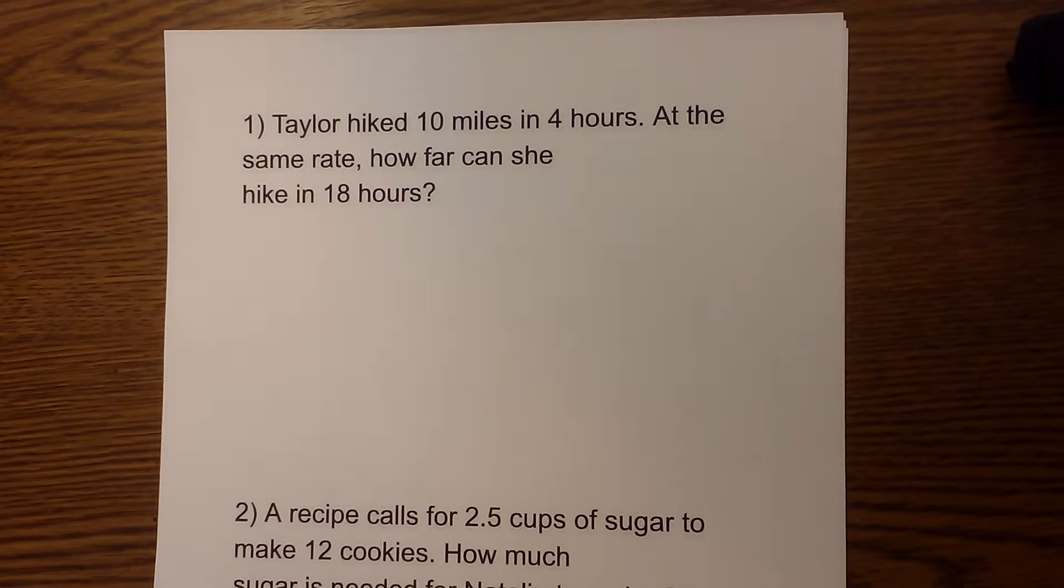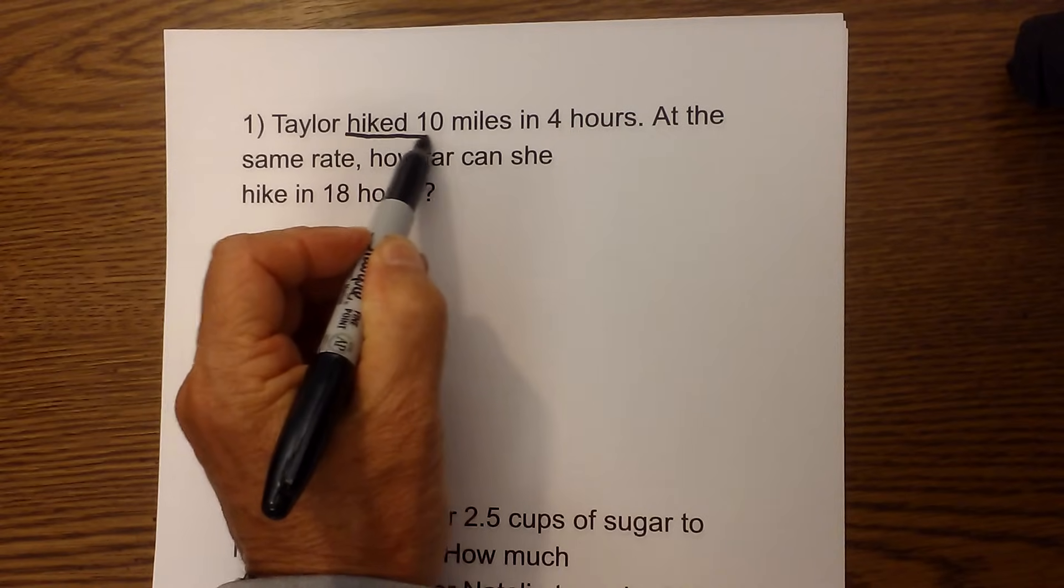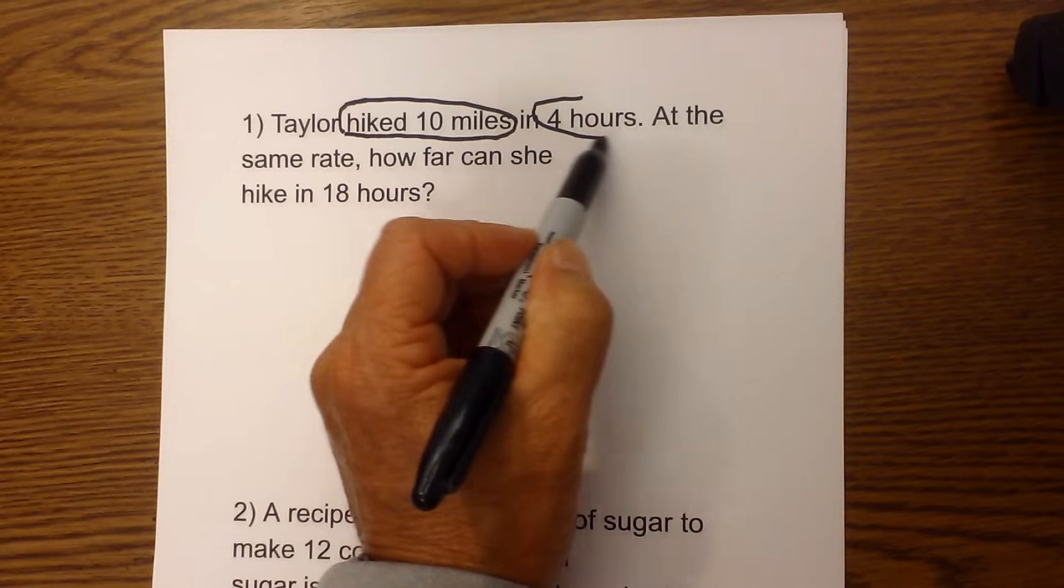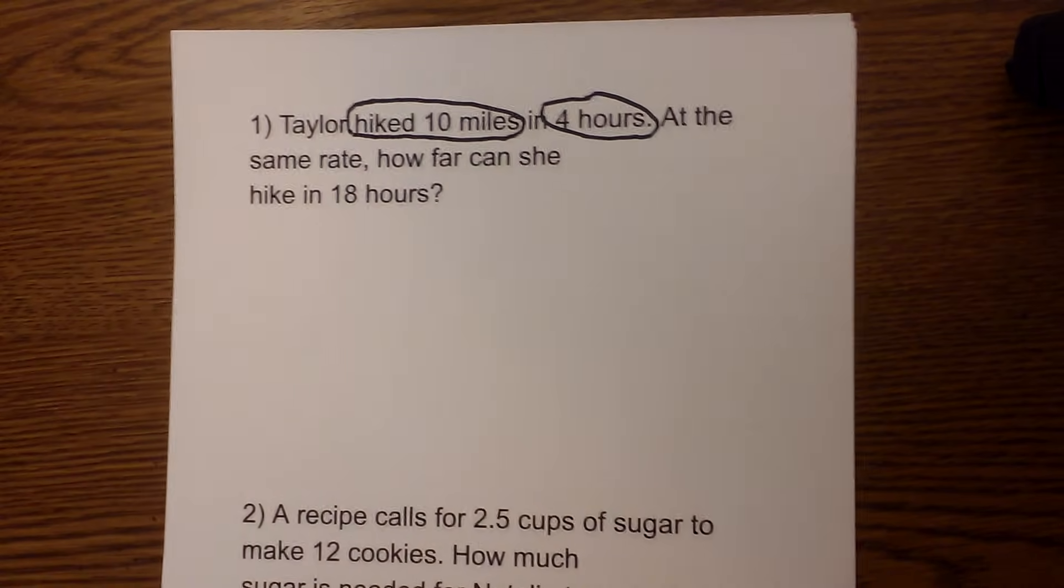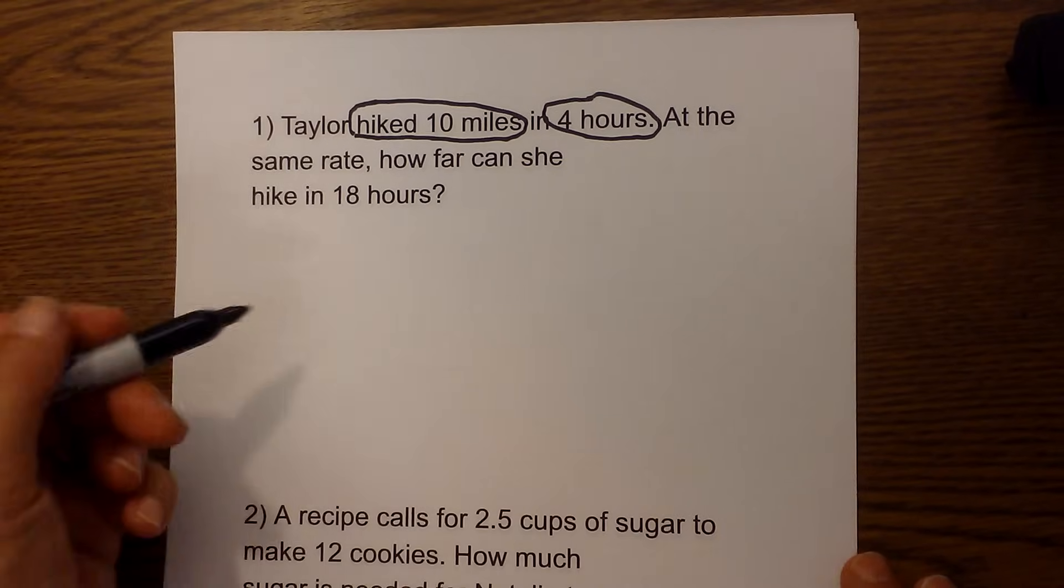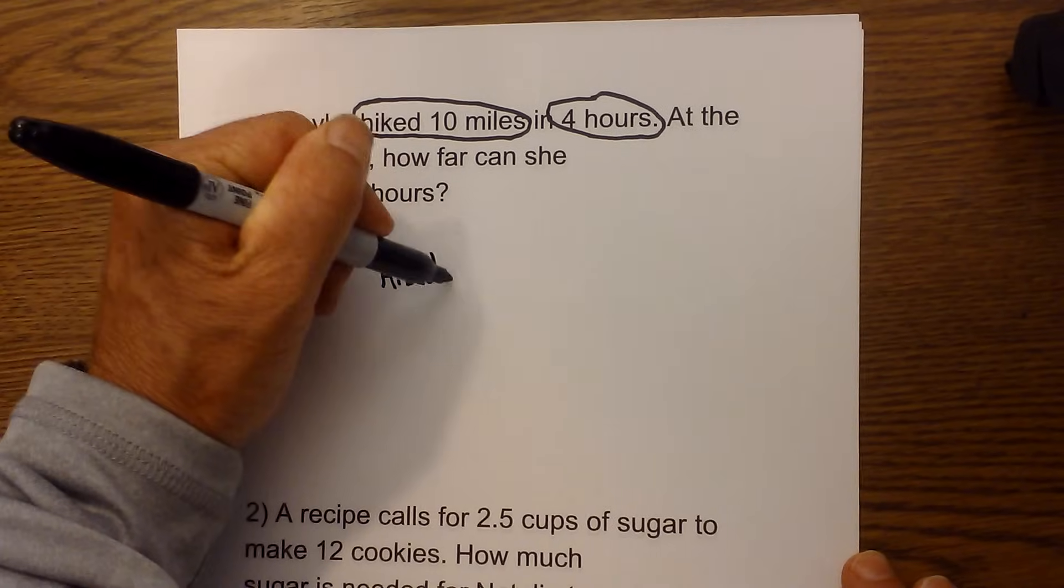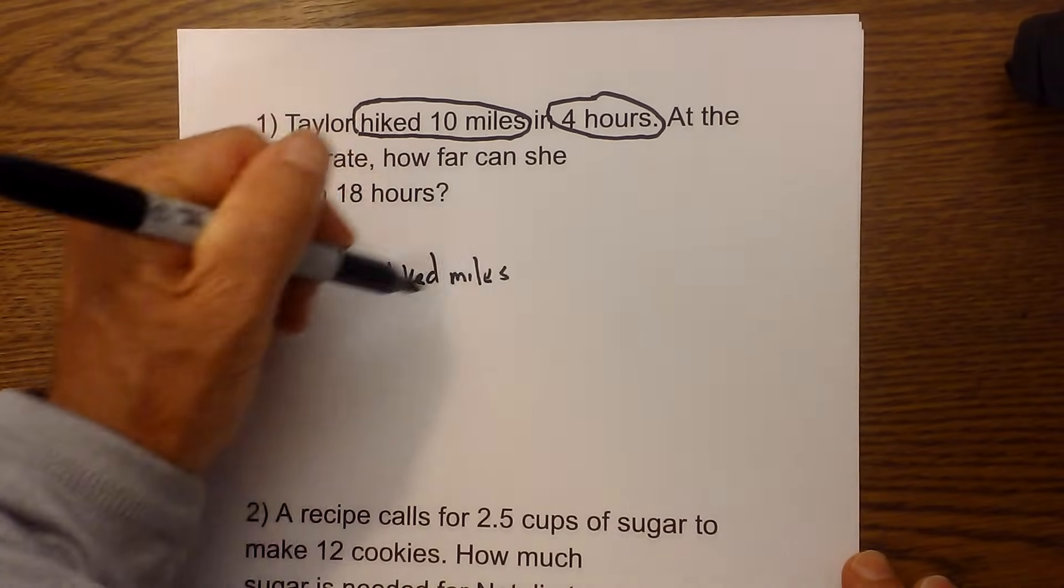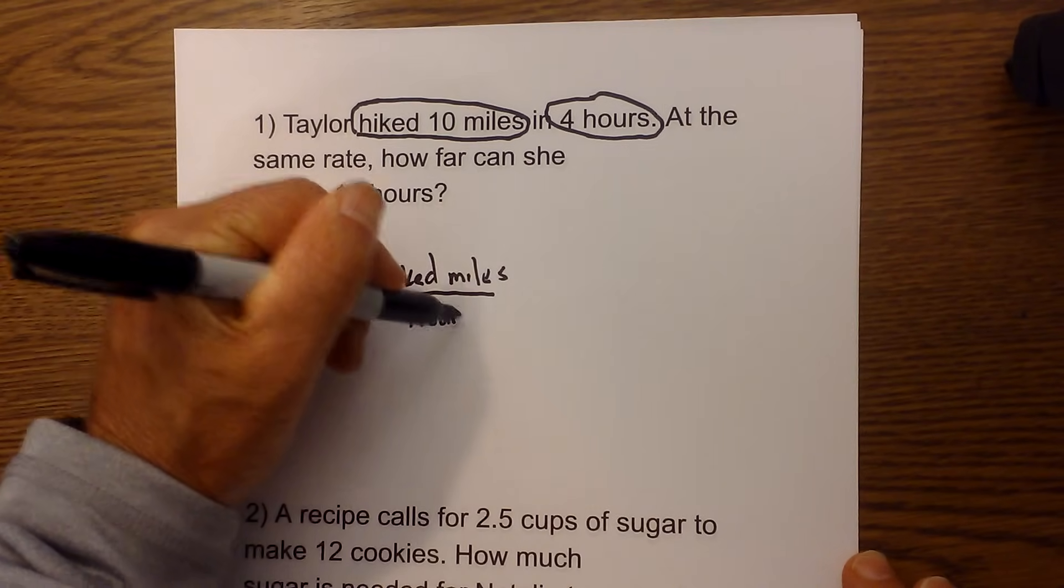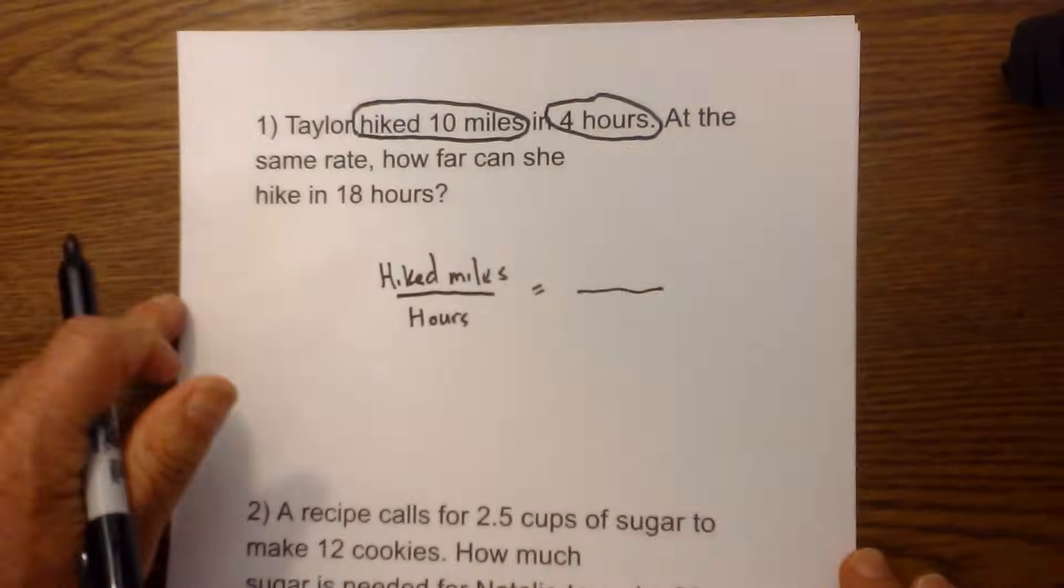The first thing I need to do is circle the units that we're going to use in our proportion. We have hiked in miles and then we have hours. Next, I'm going to go ahead and set up my first ratio, so I'm going to put hiked in miles and then I'm going to place that over hours. Then I'm going to do equals and I'm going to set up—let's first fill in our units.